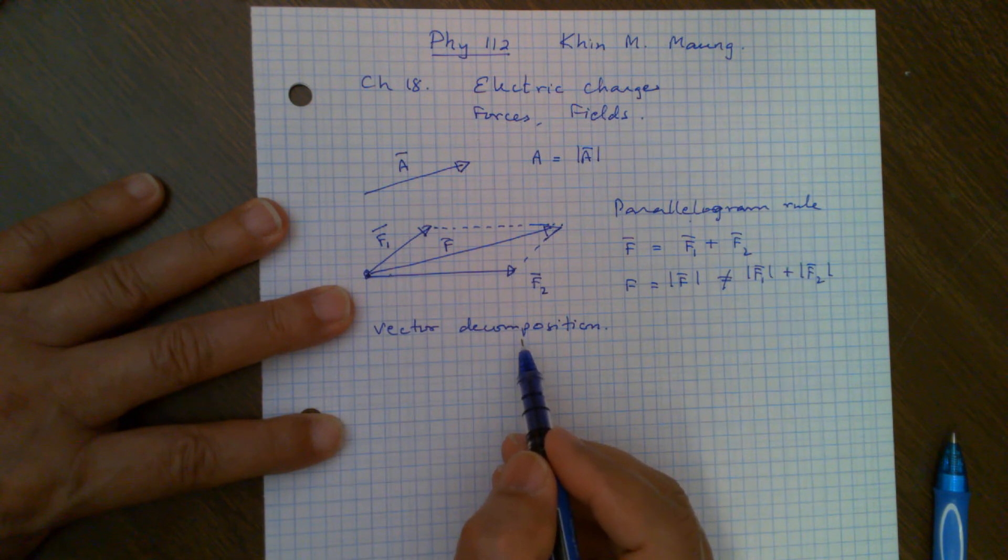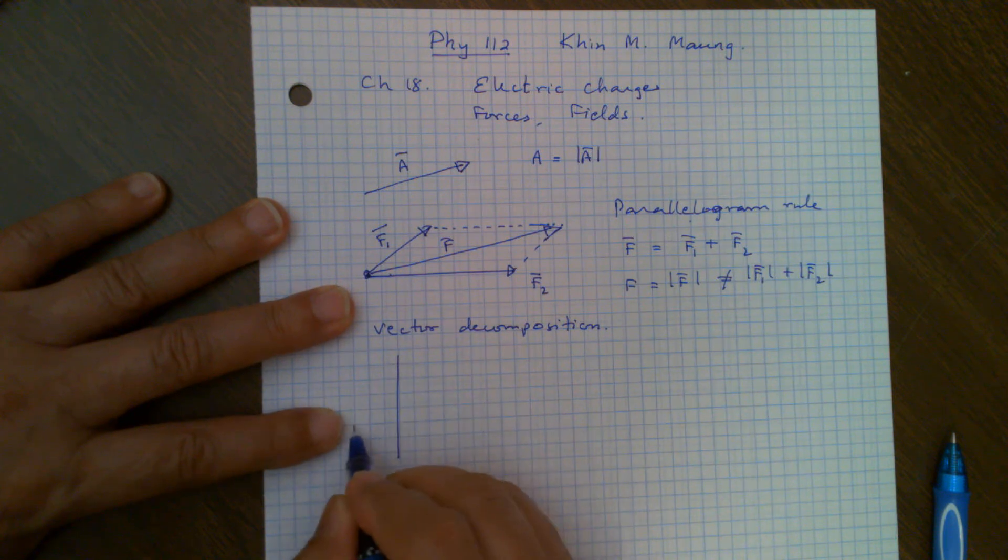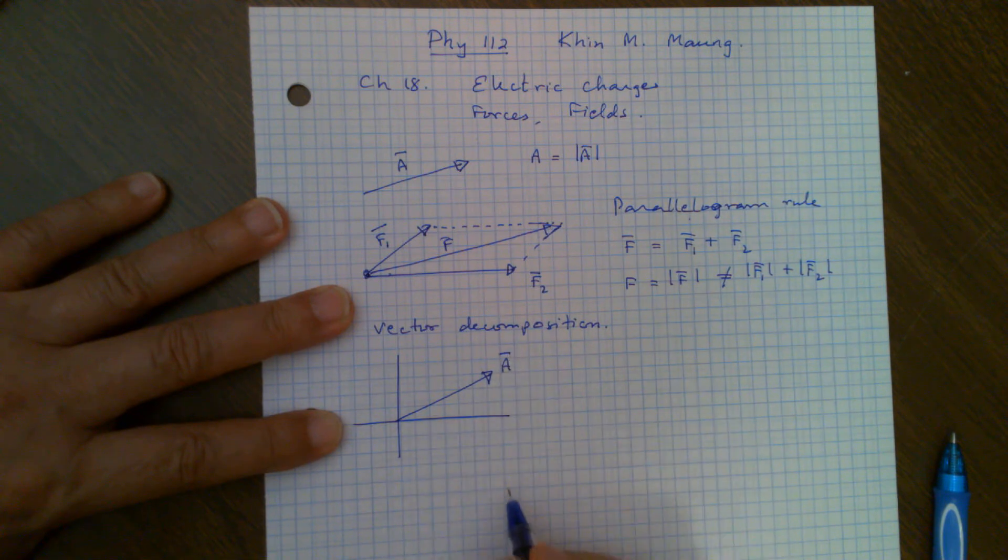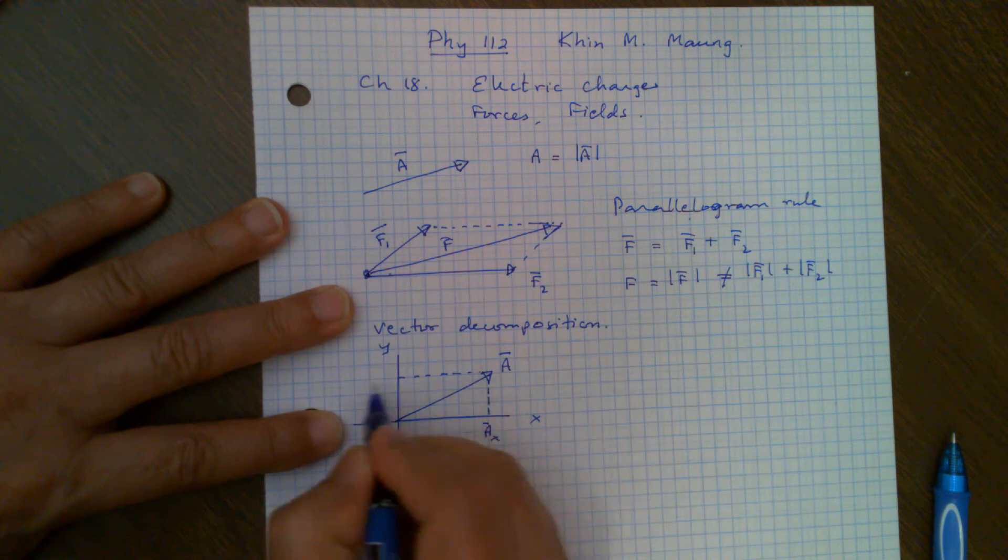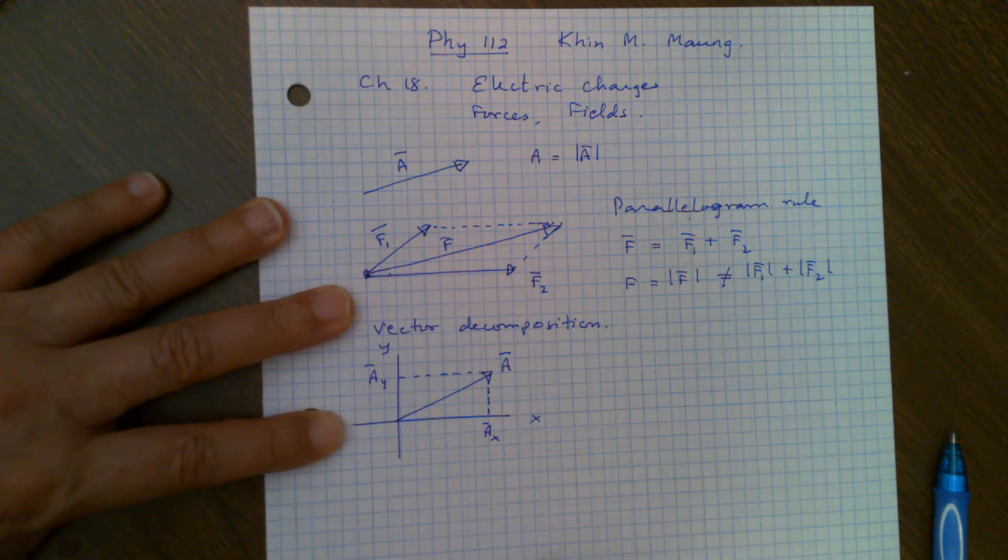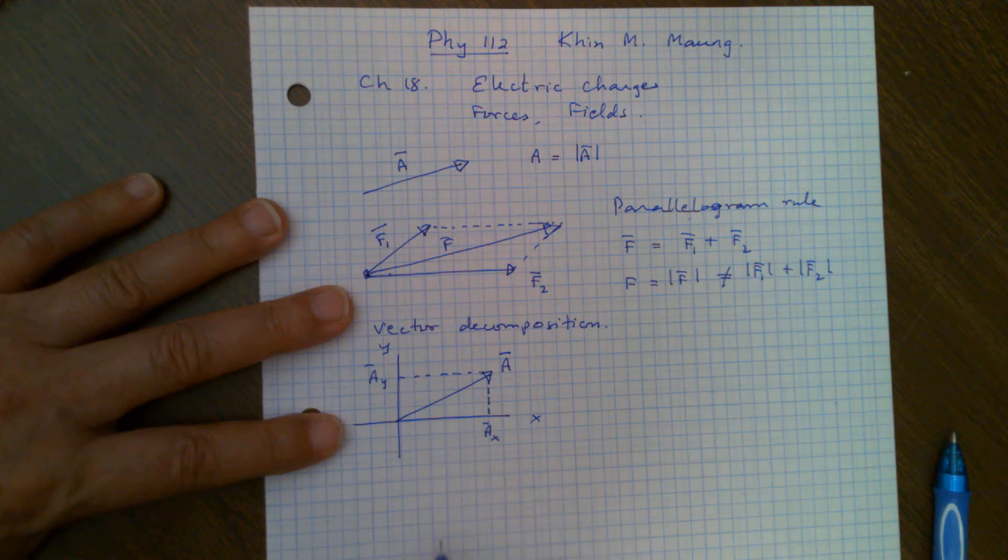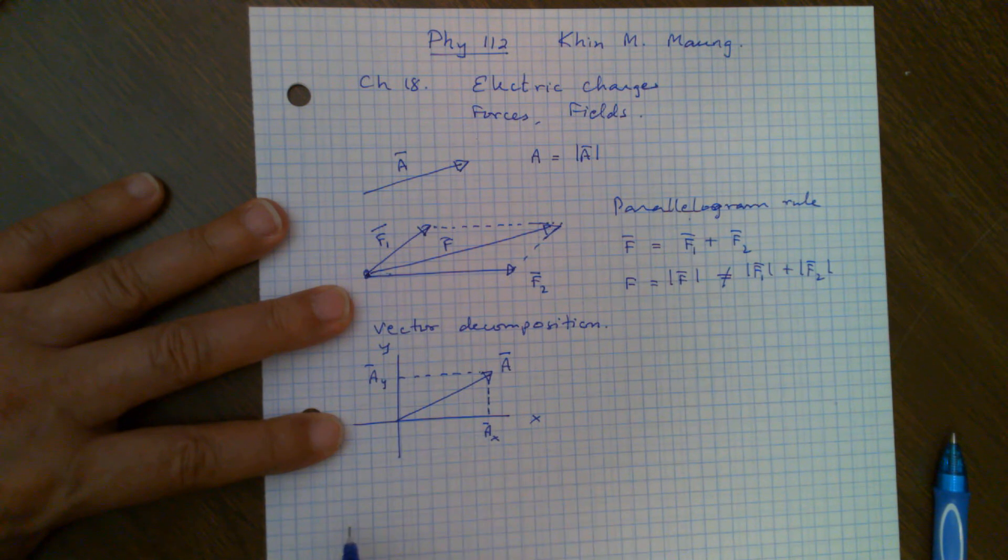But that doesn't help anything because the angle is a little bit awkward. But the thing is, I can always decompose a vector into two perpendicular components. What do I mean by that? Let me see. This is an xy plane. And you have a vector in some general direction. Let's call it A. And this is your x-axis. This is your y-axis. Then I can decompose this vector A into a vector AX and a vector AY.